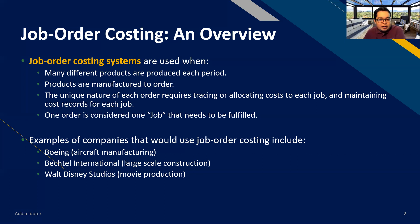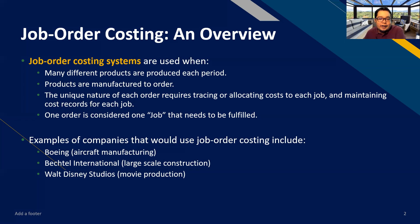Another example is Bechtel International, a construction company. For each construction project they do, the nature and design are different, so the level of execution and costs are also different. Walt Disney Studios is another example — each movie has its own cast with a different cost and uses different levels of technology. An animated movie will have a different cost than a historical movie. Each product has a different cost structure, and our objective is to appropriately determine the cost of each one using a job order costing system.